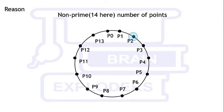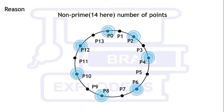Here is an example of 14 points. Twice of P1 is P2, twice of P2 is P4, then P6, P8, P10, P12, P0, and after that repetition starts.